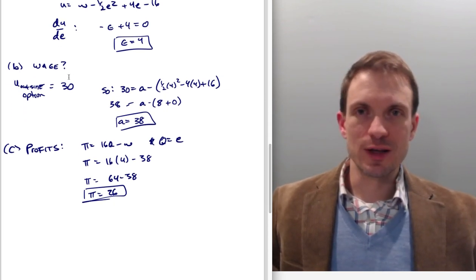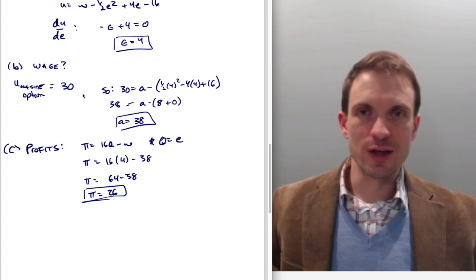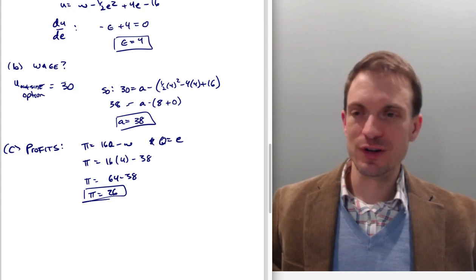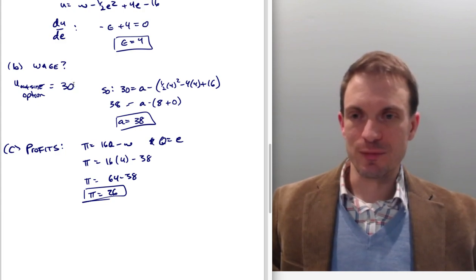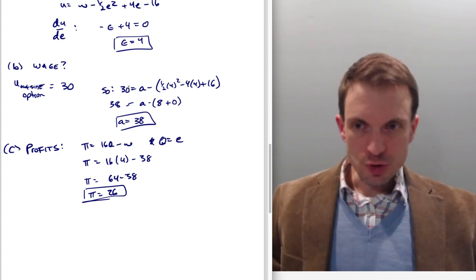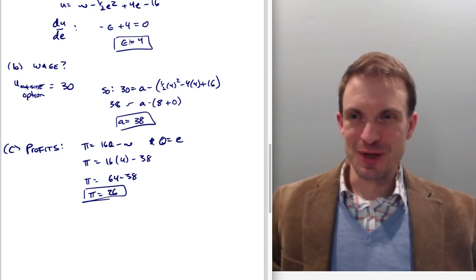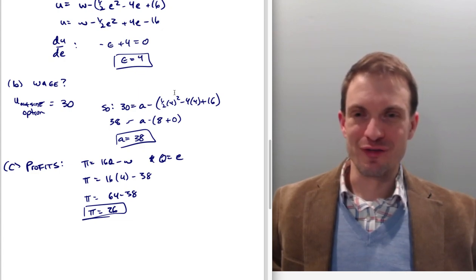So what's going to be the wage we need to give so that they're willing to do this? Well, remember the outside option was 30,000. I'm just going to drop the K or drop the 1,000 and just make it 30 for ease of computation. So we'll set 30 equal to their utility. In this case, the utility is going to be the same function above. Now we're going to evaluate this at 4.